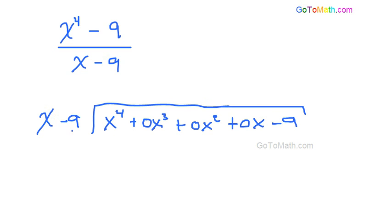Alright, so x goes into x to the 4th. We're going to be left with x cubed. x cubed times x is x to the 4th and then x cubed times negative 9 is negative 9x cubed.